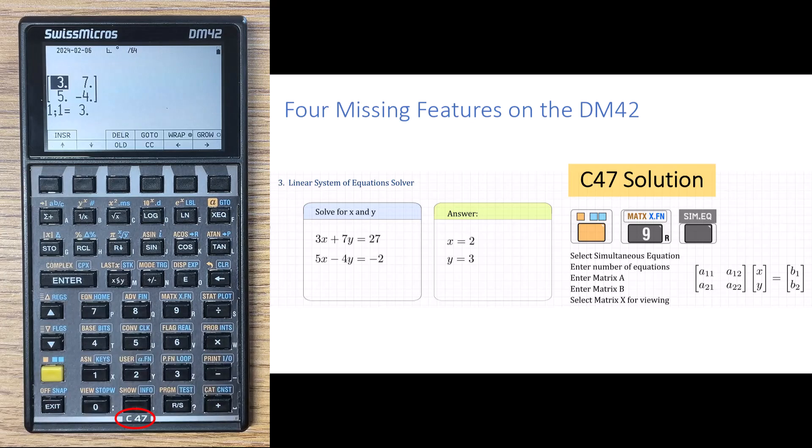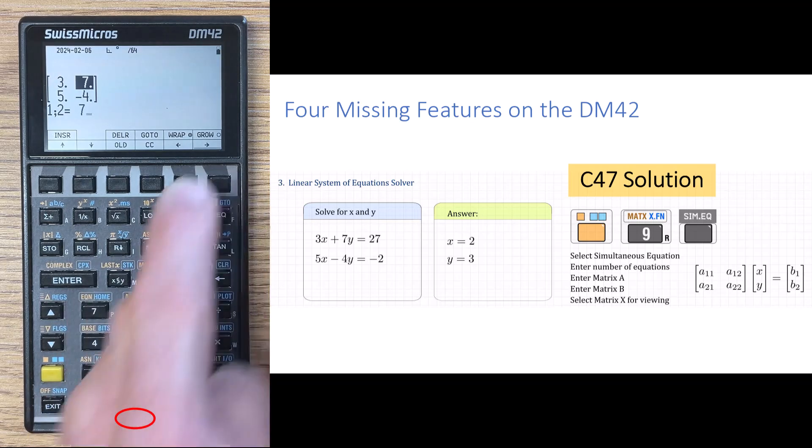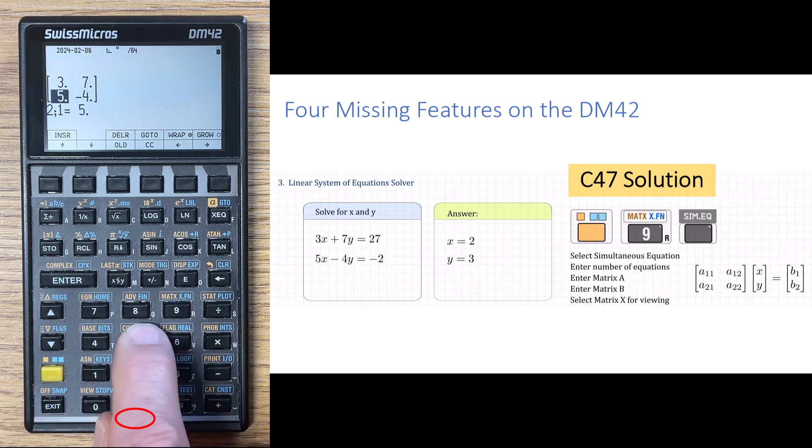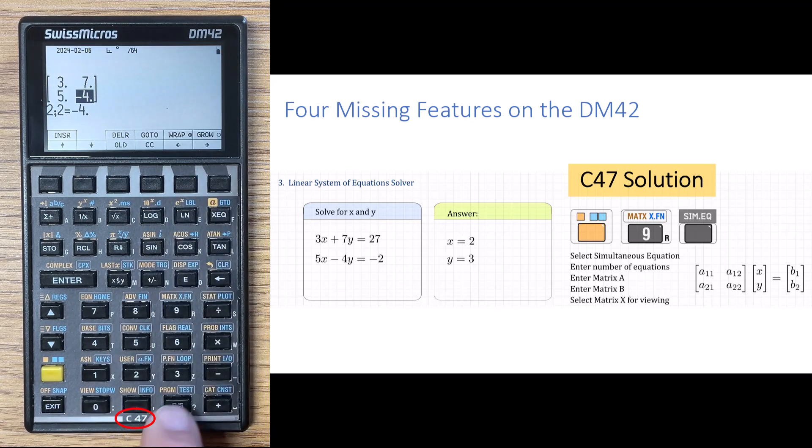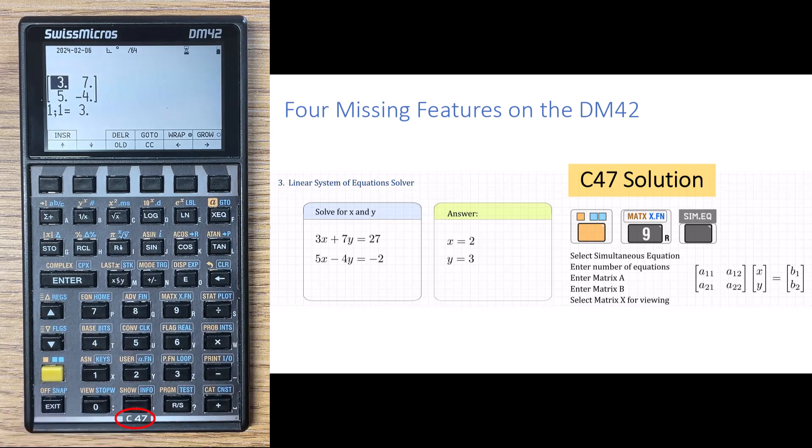Then we enter the three matrices. So matrix A, I'd already done this one, so the values are in there. But we do 3, and then right arrow, 7, right arrow, 5, right arrow, minus 4, so 4, negative, right arrow, and then we can exit.